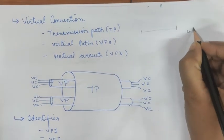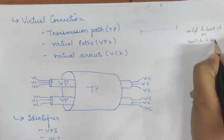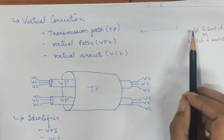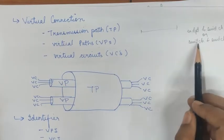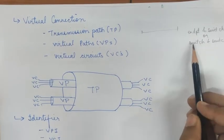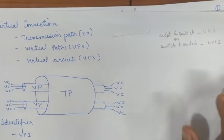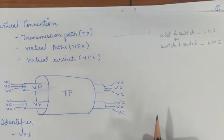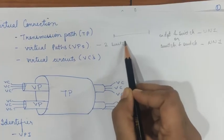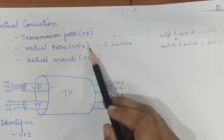A transmission path is a physical connection — it can be the connection between an endpoint and a switch (through UNI), or the connection between a switch and another switch (through NNI). A virtual path provides a logical connection between two switches.